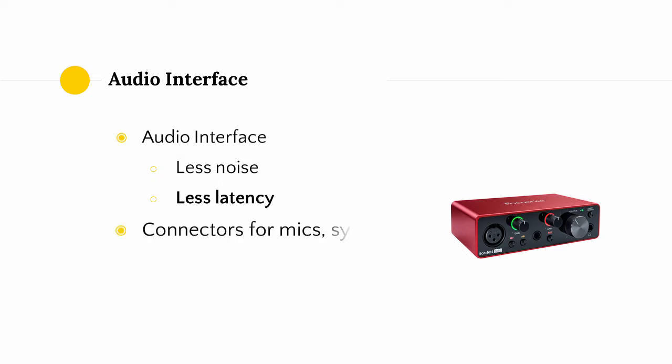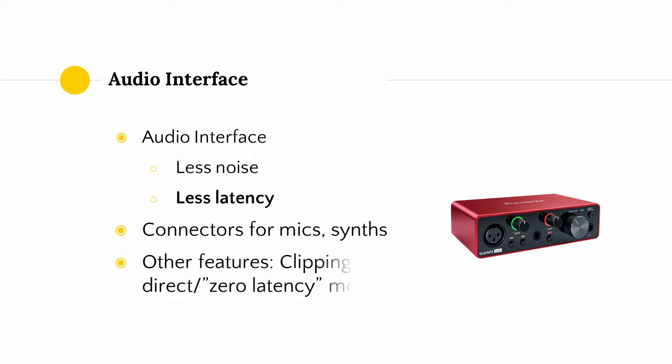Aside from less noise and less latency, audio interfaces also offer a range of connectors with which you can connect things like microphones to your computer. Recall that condenser microphones require 48V phantom power — the way you get that power to a microphone is through an XLR cable, so if you buy a condenser microphone that uses 48V phantom power, you are also going to need an audio interface that can supply that power through an XLR connector. My audio interface, the Focusrite Scarlett Solo, has LED rings around the volume knobs for each input — these LED lights will flash yellow or red if my signal is clipping. Additionally, it offers something called direct monitoring or zero-latency monitoring, which allows me to listen to the input signals on the interface with zero latency through any headphones or speakers connected to the interface. This can be especially useful for troubleshooting recording problems.